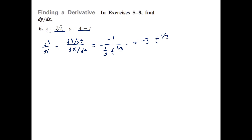That gives you t to the positive two-thirds, and there you go. But to be complete, we need to associate with each x coordinate a slope of a tangent line, so the x parametric equation shouldn't change — x of t should still be the cube root of t.